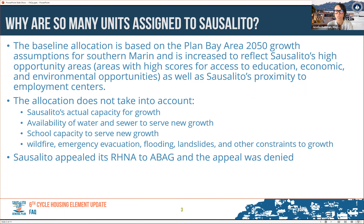Regarding why we haven't appealed the numbers: we did appeal our RHNA numbers to ABAG, and the appeal was denied. We also evaluated whether to join a lawsuit against the California Department of Housing and Community Development, and after consideration and confidential advice of the city attorney, we declined to participate in potential litigation at this time. We will continue to monitor and evaluate other opportunities to work with ABAG on our numbers.